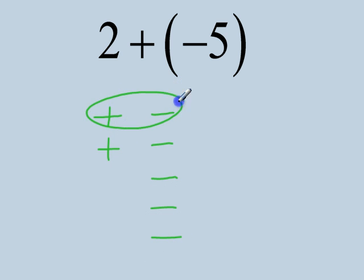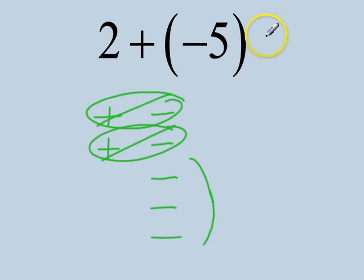We can see here that we have 2 zero pairs, so those both cancel to be 0, and we're left with 3 negatives, so the answer is negative 3.